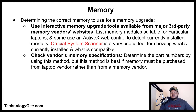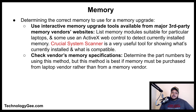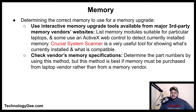To determine the correct memory for an upgrade, use the interactive memory upgrade tools available from major third-party memory vendor websites. These tools list memory modules suitable for a particular laptop, and some use an ActiveX web control to detect currently installed memory. The Crucial System Scanner is a very useful tool for showing what's installed and what is compatible. You can also check the vendor's memory specifications to determine part numbers, which is best when memory must be purchased from the laptop vendor.